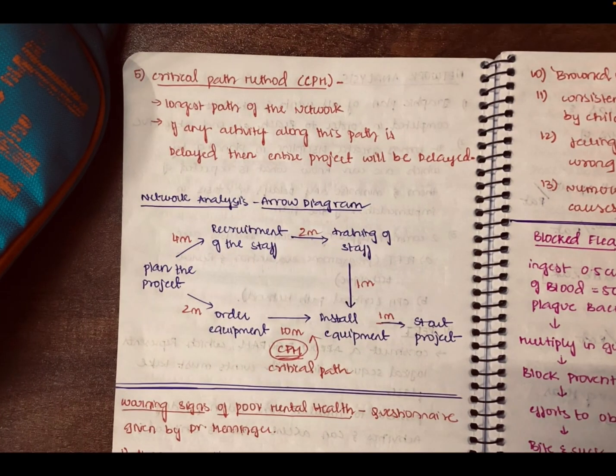Now let's talk about the Critical Path Method. In PERT, there is one activity which takes the longest time — that is the critical activity. It is the longest path of the network. If any activity along this path is delayed, the entire project will be delayed. Looking at the arrow diagram example: we plan for the project and order the equipment, which takes two months, and the installation of equipment requires 10 months.